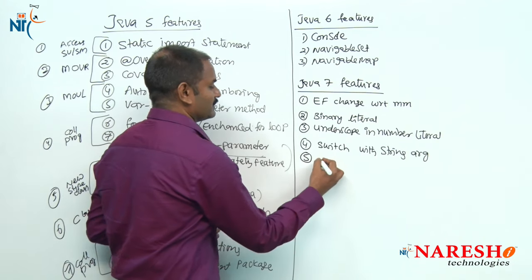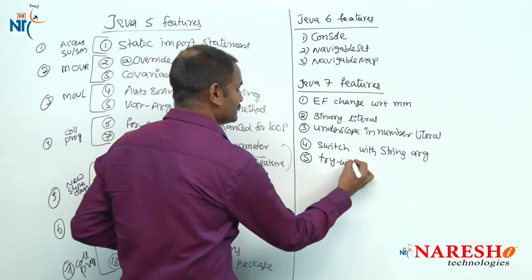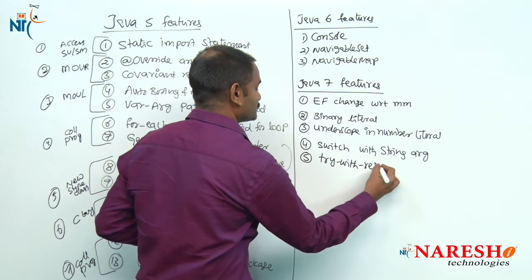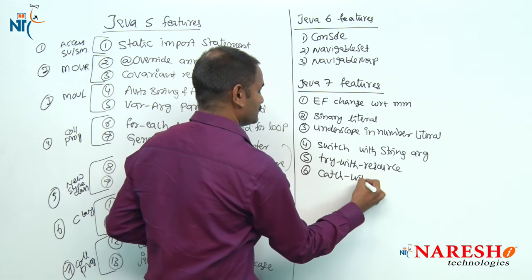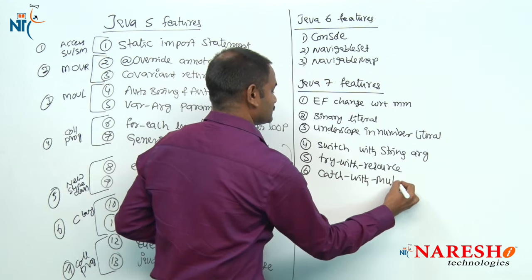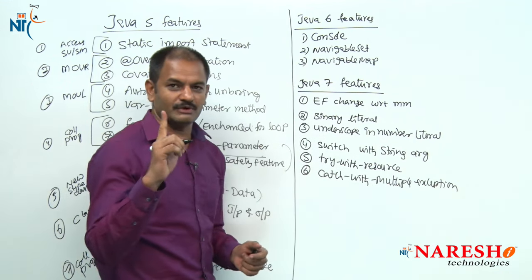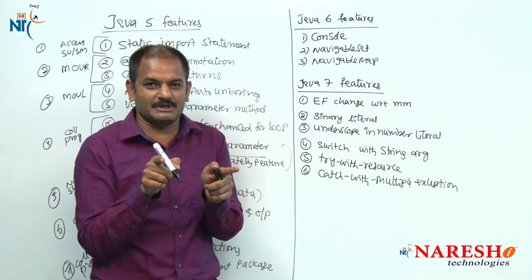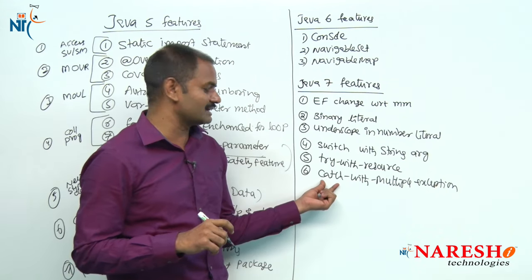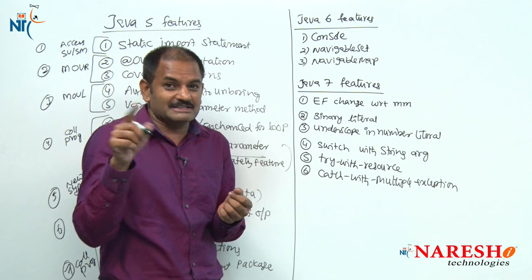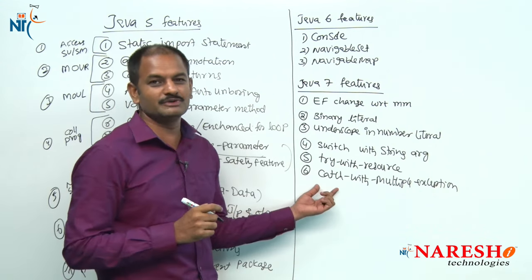A very, very important topic in Java 7 is the enhancement in exception handling — try-with-resources. Also added is multi-catch: a catch block can now catch multiple exceptions. Previously a catch block could contain only one exception class parameter, but from Java 7 onwards, we can create a catch block with multiple exception classes separated by a pipe symbol '|'. These are beautiful enhancements.